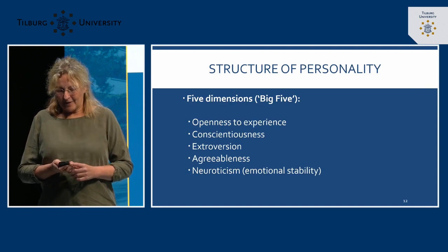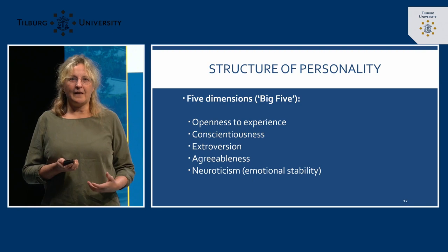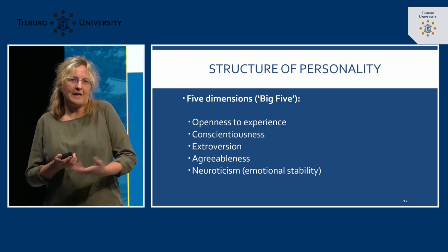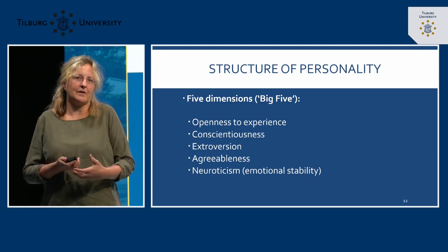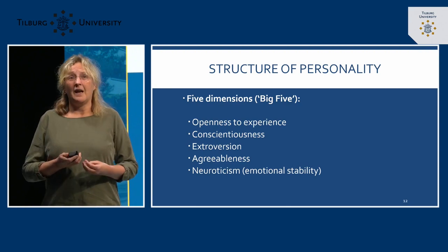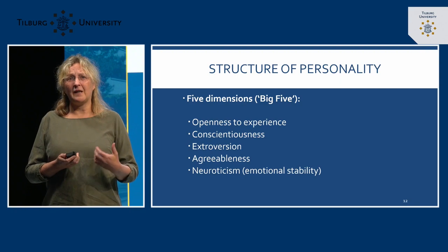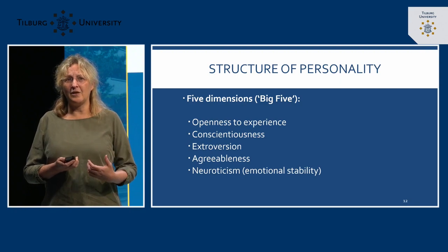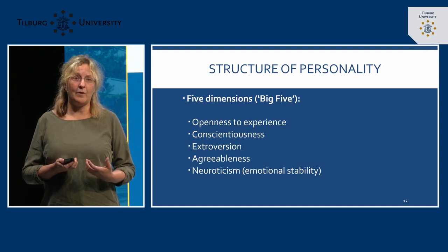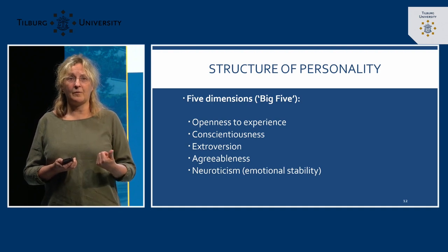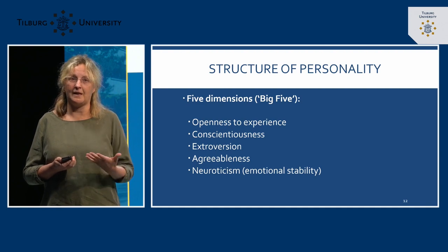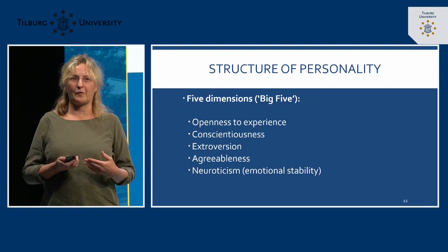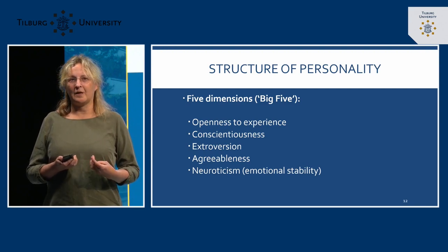Now, to personality. Personality is a bit more tricky — there is no underlying general factor like G, and you cannot have more or less personality. The concept itself is more difficult. There is, however, a pattern in personality dimensions, and nowadays the Big Five model is the most well-known. The acronym stands for OCEAN: O for Openness to experience, C for Conscientiousness, E for Extroversion, A for Agreeableness, and N for Neuroticism — or the more preferred framing, Emotional Stability.